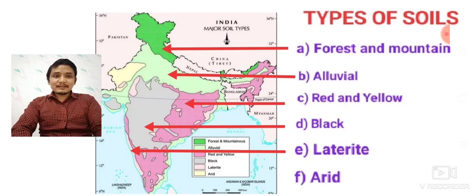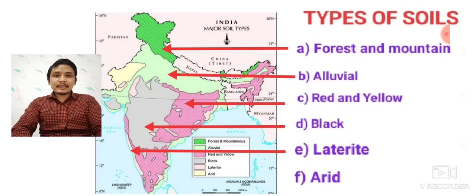Now, red and yellow soil — you can follow the arrow. It is widely found in India, basically in the southern and south-eastern part of India. At the same time, in the easternmost part of India — Mizoram, Nagaland, some parts of Assam, and Manipur — we also find red and yellow soil. Next: black soil, found mostly in Maharashtra and the Saurashtra region of Gujarat.